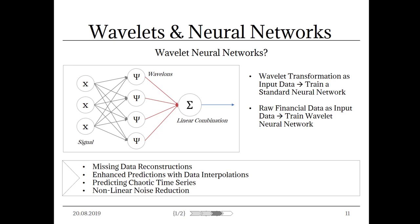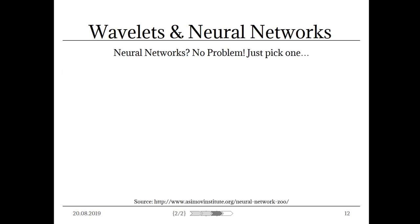What else can you use a wavelet neural network for? You are able to reconstruct missing data, calculate enhanced predictions, forecast chaotic time series — which is part of my PhD thesis — and reduce non-linear noise within your data. There are two ways of action: take a standard network and train it with a decomposition, or use raw data and feed it to a wavelet neural network. We want to teach a network to recognize patterns and produce forecasts by utilizing financial big data.